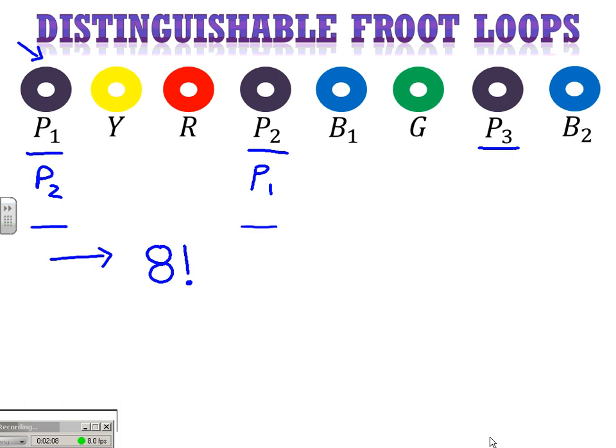And then this position, and then this position. So, if I just took out my three purple fruit loops and could somehow distinguish them, how many ways could they be arranged? I would have three choices here, two choices, one choice.